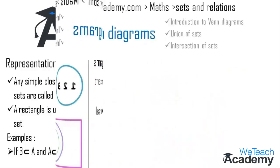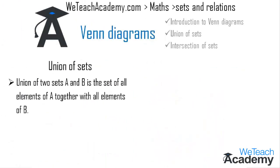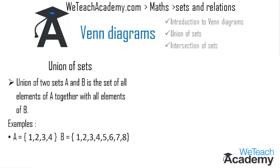Now let us discuss about union of sets. The union of two sets A and B is the set of all the elements of A together with all the elements of B. Here we have an example where the elements of A are 1, 2, 3, 4 and the elements of B are 1, 2, 3, 4, 5, 6, 7, 8.